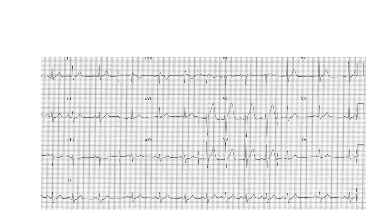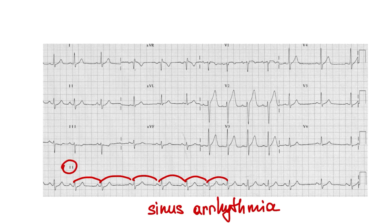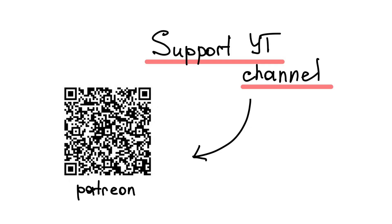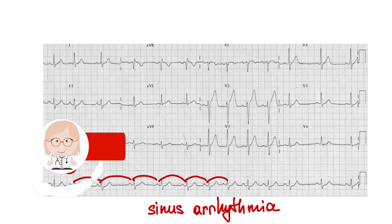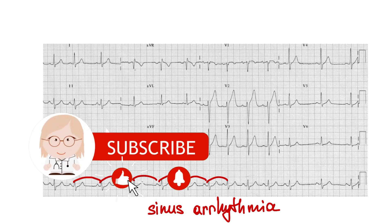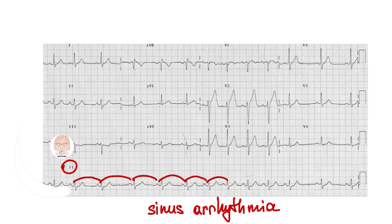If you find sinus rhythm but irregular, it's sinus arrhythmia — when we see different RR intervals of more than 10% of the mean. Thank you for watching my video. If you want more videos about ECG, subscribe to my channel.